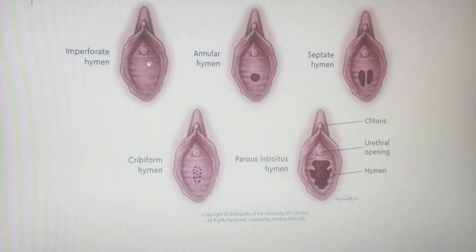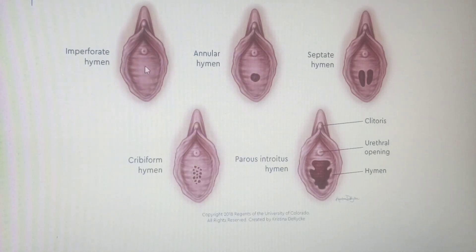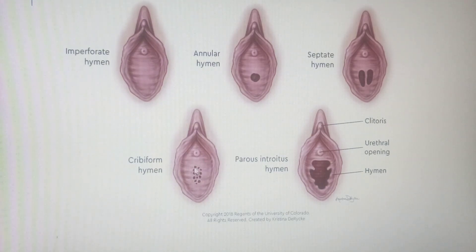Also part of the vulva or external genitalia in females is the hymen. There are several types. Usually in children it is crescentic in shape, but there are variations. There is the imperforate hymen — one that has not been perforated at all. If it remains imperforate after several attempts at sexual intercourse, surgical intervention is required to perforate it. There is also the annular type with an oval-shaped opening, the septate type with a septum between two small openings, the cribriform type like a colander, and the parous introitus type typically seen after delivery.